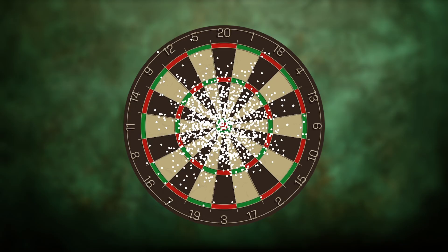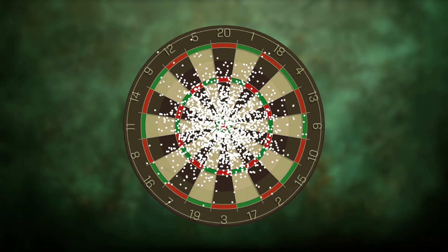If we keep throwing and recording each impact, the pattern becomes clearer. Near the bullseye, the points are dense. Farther out, they get sparser.